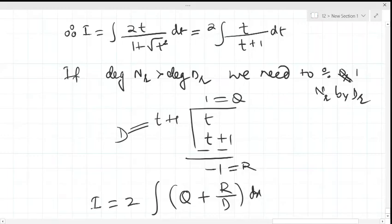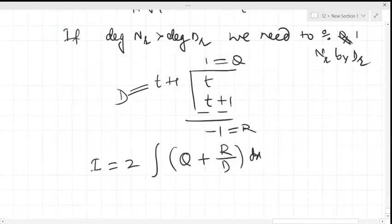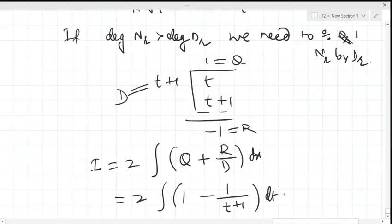So quotient plus remainder upon divisor. Finally, it becomes like 2 into, quotient is 1, remainder is minus 1, upon t plus 1.